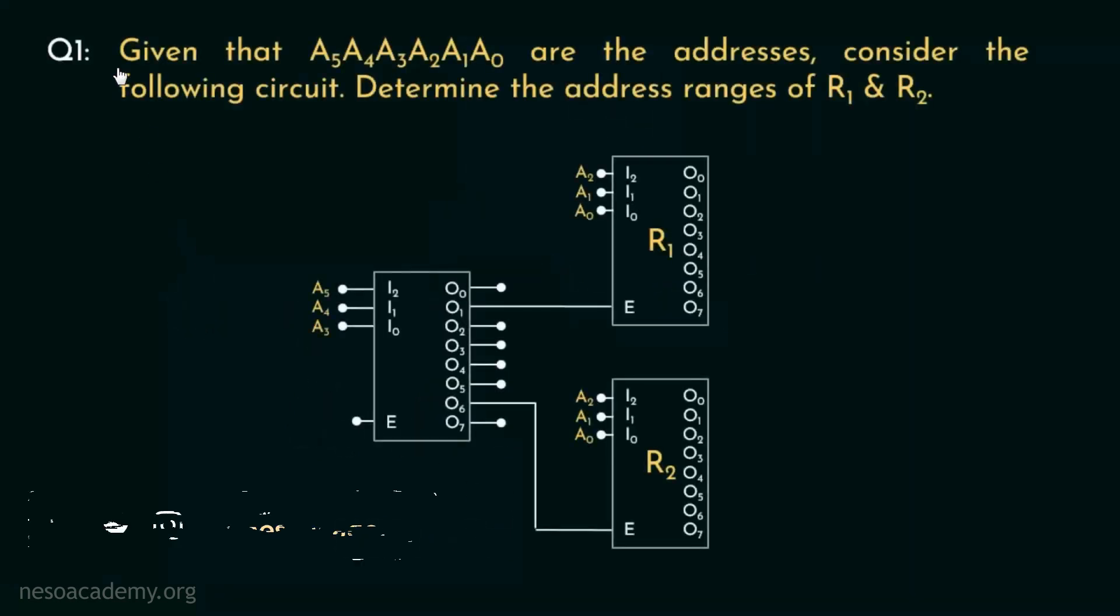Consider this problem: given that A5, A4, A3, A2, A1 and A0 are the addresses, consider the following circuit. This is the circuit we are talking about. Now we are to determine the address ranges covered by R1 and R2.